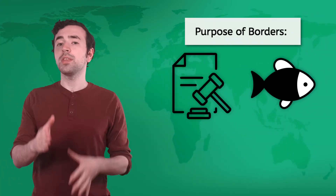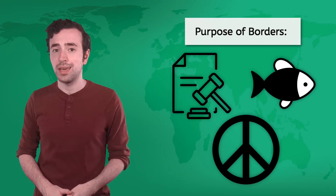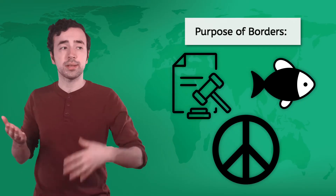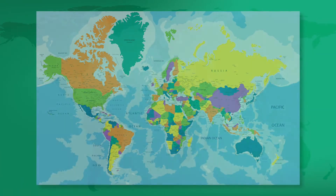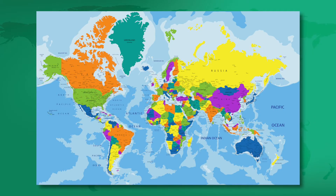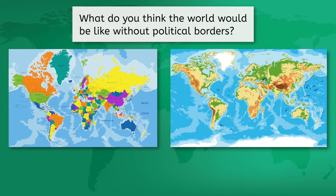Most importantly, borders help maintain peaceful relationships between states. They define where one ends and another begins, limiting conflicts between neighbors. Think about all of these reasons for political borders — what do you think the world would be like without them? After going through it, yeah, I think it's definitely worthwhile for my neighbor and I to establish a border.